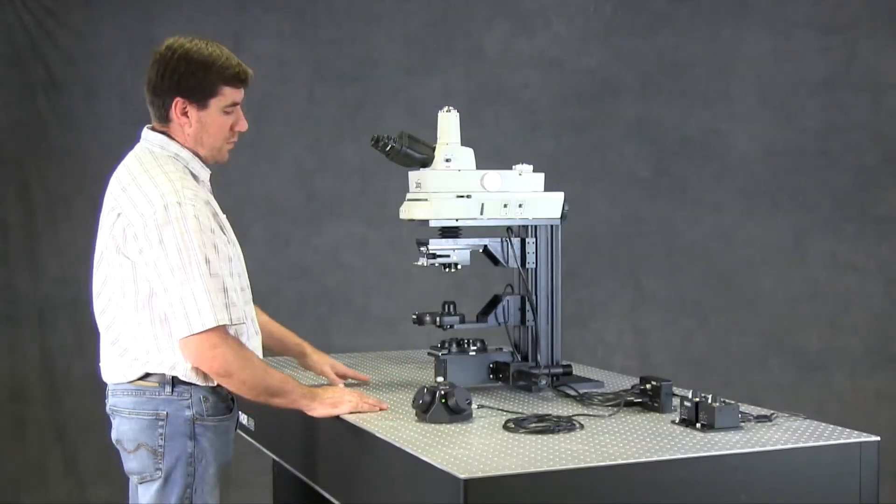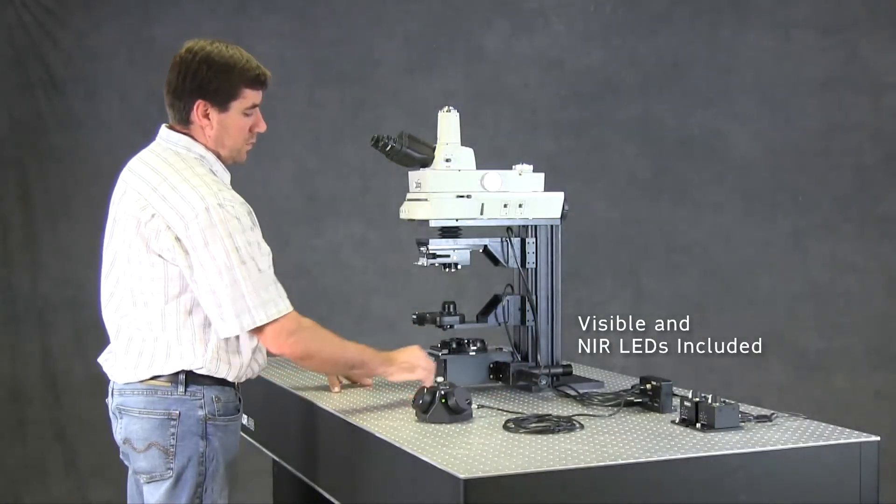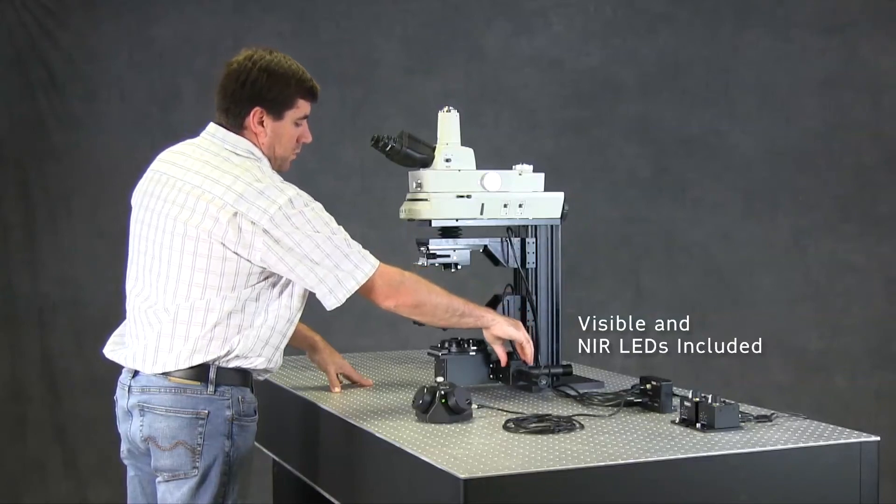For DIC and bright field illumination, we include visible and near-infrared LEDs. A dichroic mirror inside the user-removable filter cube combines the LED's optical output.